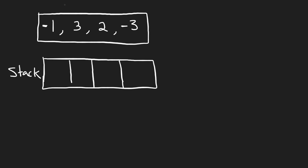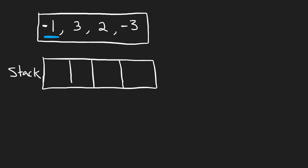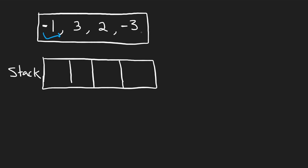Let's try iterating through the array, starting at the leftmost spot and deciding which asteroids we're going to keep and which ones are going to collide. You'll find that using a stack data structure is going to be the most optimal way to solve it.